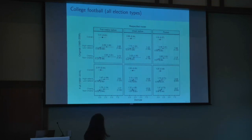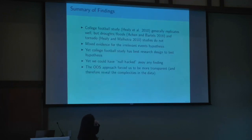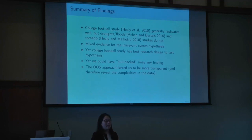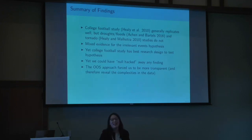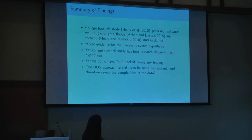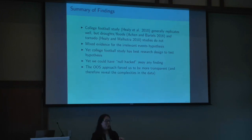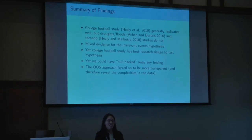In summary: the college football study generally replicated; the two other studies were more mixed. In the Healy and Malhotra natural disasters study, an error was found in the original paper — which Neil Malhotra, a co-author on the replication team, acknowledged — demonstrating that the data re-collection and raw data review process was quite important. The overall findings remain somewhat mixed, but college football results appear more clearly random than natural disasters, especially given conversations around climate change shifting what natural disasters really represent.